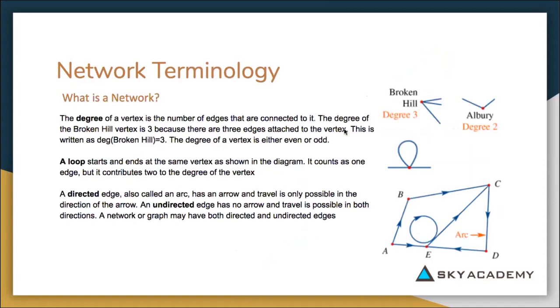Now a degree is the amount of lines coming out of a vertex. So we can see here in Broken Hill that this node has three lines coming out of it, which means it has a degree of three. Here, Albury has two lines coming out of it, so it has a degree of two.